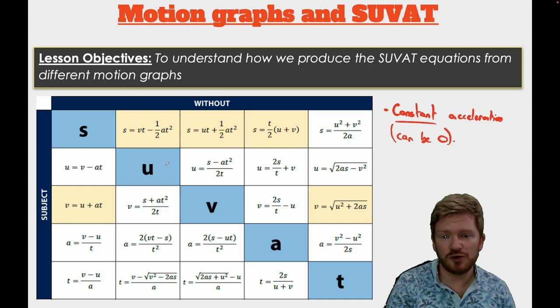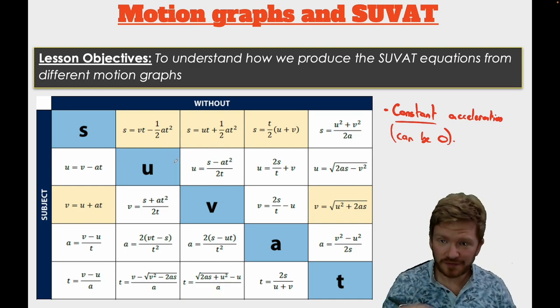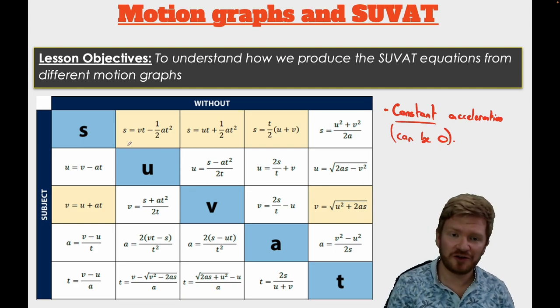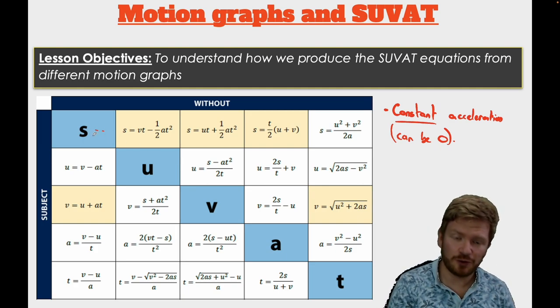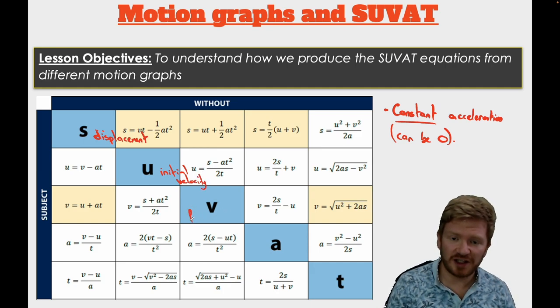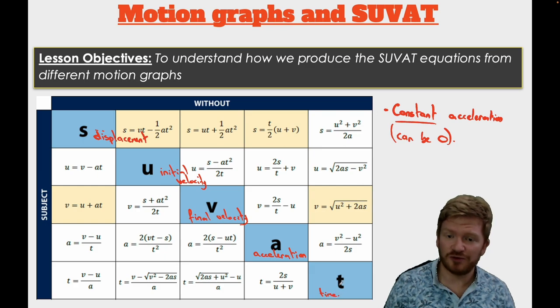They're called SUVAT because they use these five letters: S-U-V-A and T. They're a little bit different to what you may have used in the past. When we're talking about SUVAT equations, we always use S for displacement from the origin. All of these terms are vectors, so this is distance with a direction. U is always used for the initial velocity of an object. V is always used for the final velocity of an object. A gives me the acceleration, which could be zero.